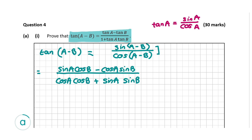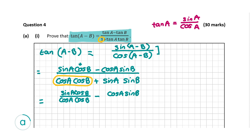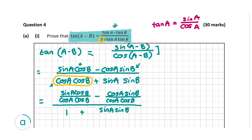We want to turn the cos A cos B in the denominator into a 1, and we can do that by dividing every expression by cos A cos B. So the numerator becomes sin A cos B over cos A cos B, minus cos A sin B over cos A cos B. When we divide cos A cos B by itself we get 1, and we're getting closer to what we need to prove. The denominator becomes 1 plus sin A sin B divided by cos A cos B.